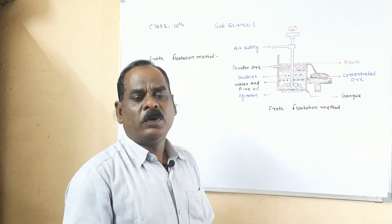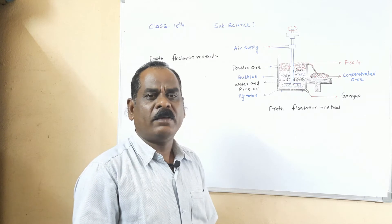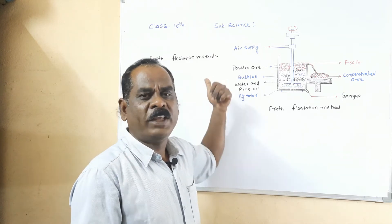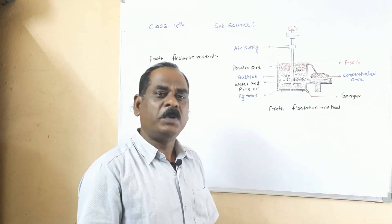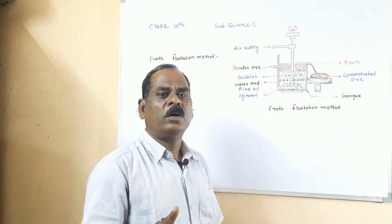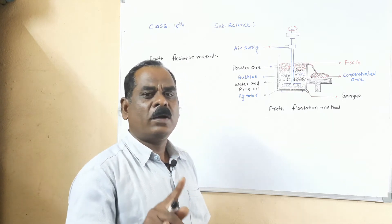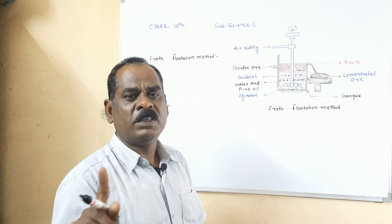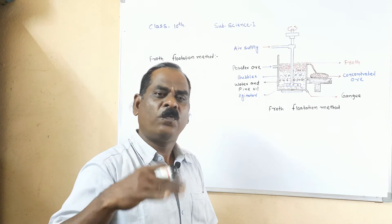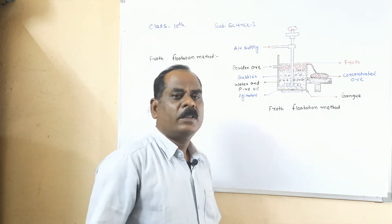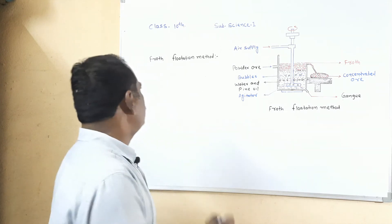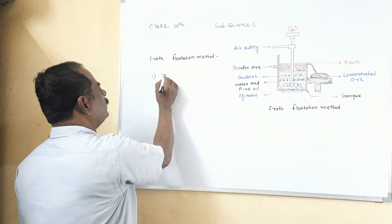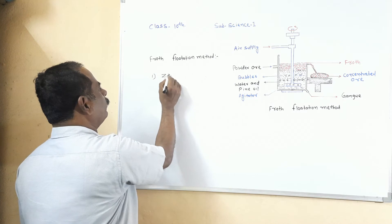Generally, sulphide ores are concentrated by the froth flotation method because sulphide ores are not wetted with water — meaning sulphide ores are hydrophobic. The first example of such ores is zinc blende.